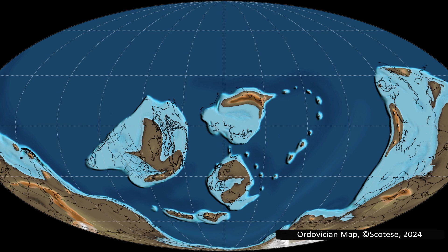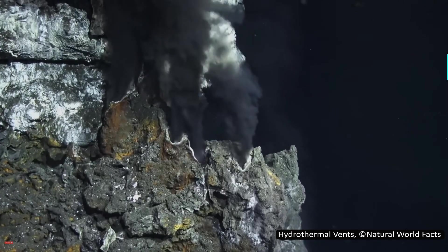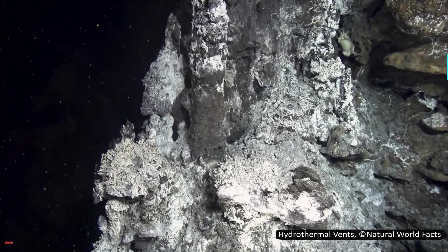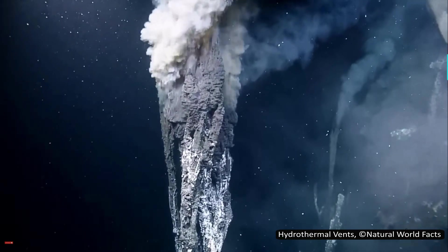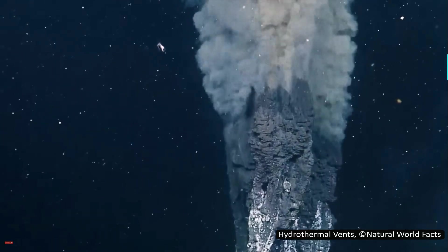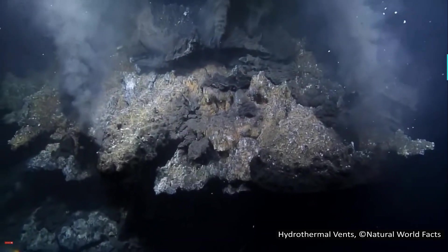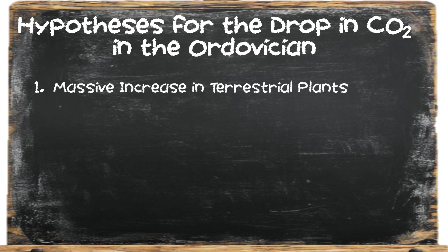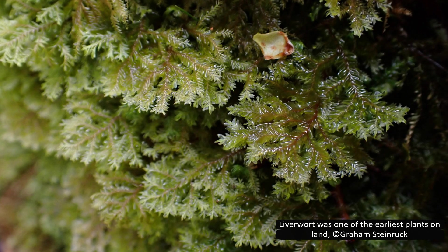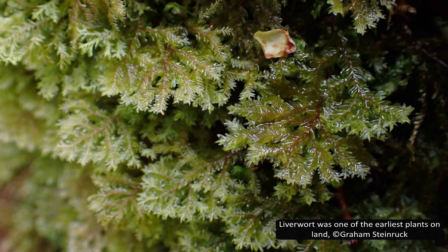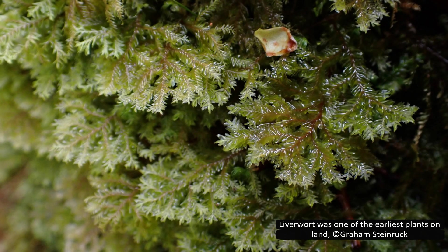While the exact cause of this glaciation remains a mystery, several theories attempt to explain it. CO2 levels throughout the Ordovician were significantly high — around 8 to 20 times pre-industrial levels. High CO2 typically warms the Earth, which makes the onset of glaciation puzzling. However, it appears CO2 levels plummeted during the Hirnantian stage. One hypothesis suggests that terrestrial flora experienced a major explosion in abundance. The first evidence of terrestrial plants appears in the Ordovician, albeit sparse. One theory suggests an explosion in plant life at this time, increasing photosynthesis exponentially and thus decreasing atmospheric CO2. However, there is no fossil evidence to support this.